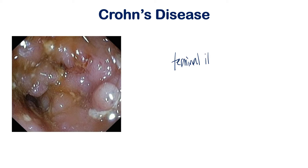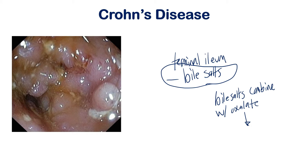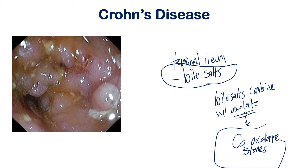Because the primary damage is at the terminal ileum, remember what is normally absorbed there — bile salts and bile fats. If these are not absorbed, bile salts combine with oxalate and are retained in the body. This buildup of bile salts with oxalate can form calcium oxalate stones in the kidney — calcium oxalate nephrolithiasis, essentially kidney stones.